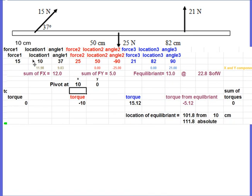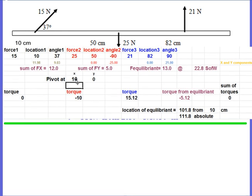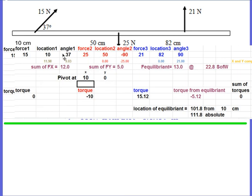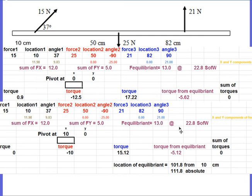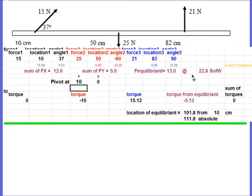If I take the spreadsheet and move the pivot to 10 centimeters, then the force at that location contributes no torque. Before I got a torque of 0.9 from that force; now it's zero. The other two torques change, and the required torque from the equilibriant becomes 5.12 instead of 5.62. But in order to produce that torque with a smaller moment arm, the force must be placed at a distance that, when added to the pivot position of 10 centimeters, gives exactly 111.8 centimeters — the same spot as before.